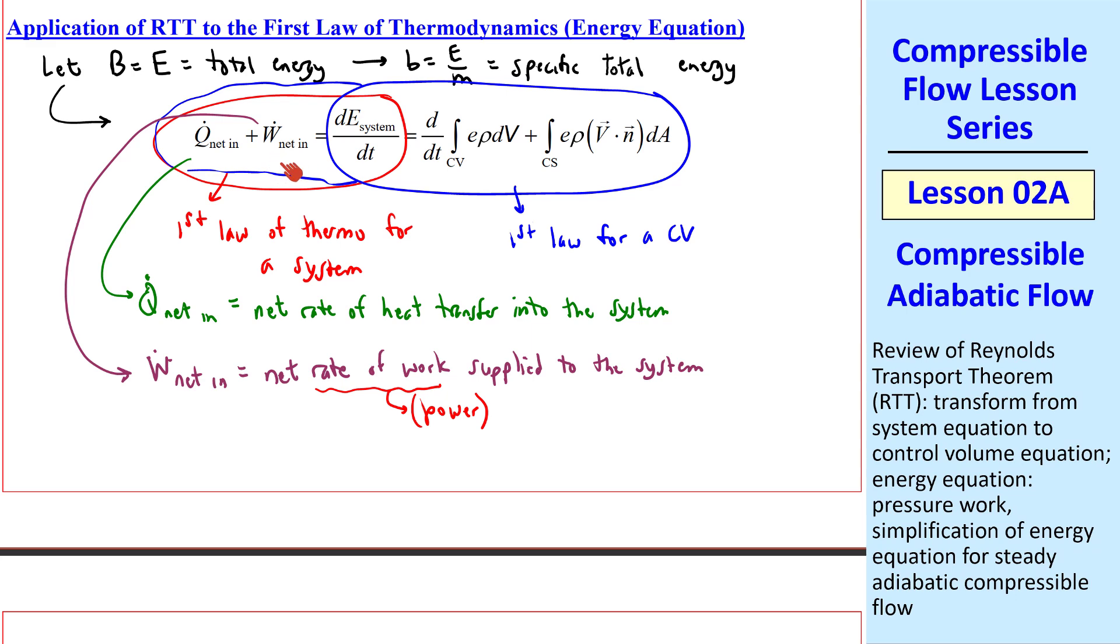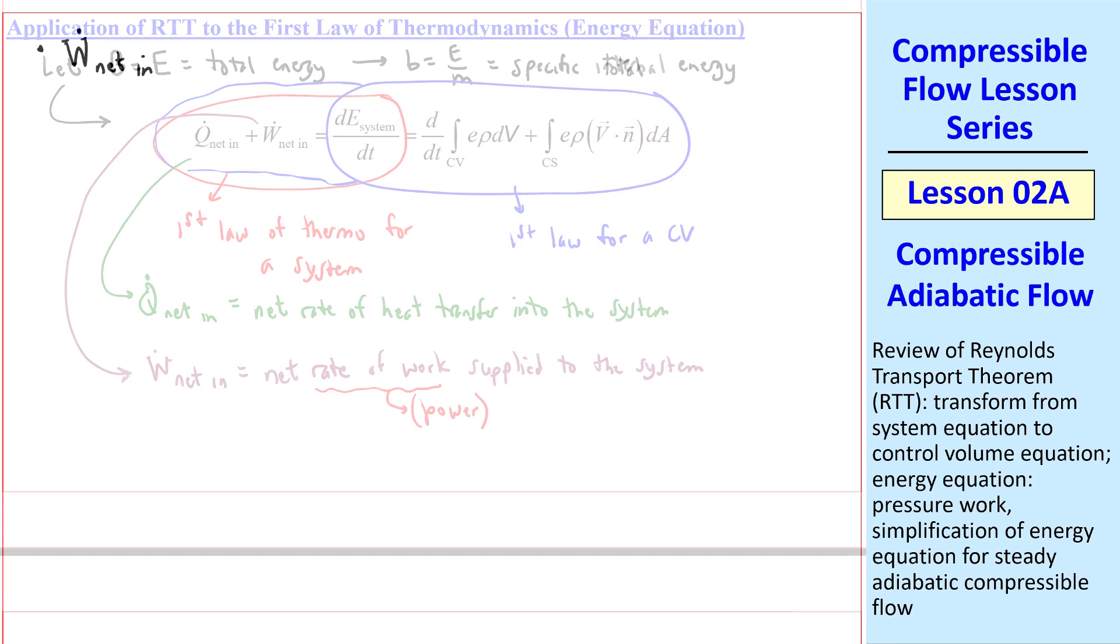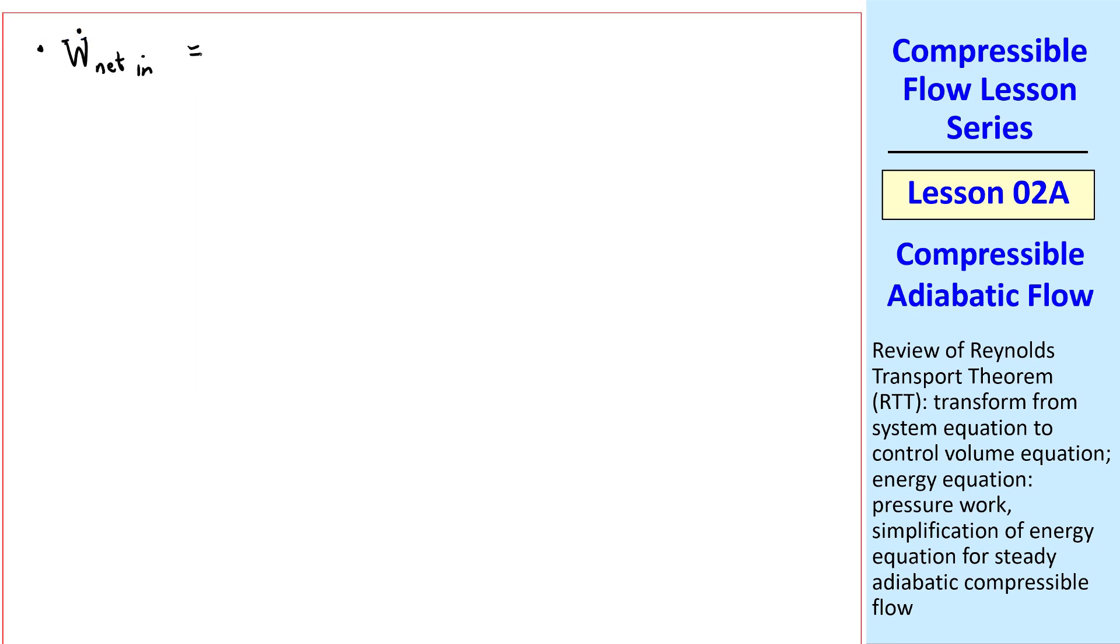Now let's more closely examine this power term. We'll consider two components of W dot net in, a shaft power and a pressure power. Shaft power, as we recall from our fluids class, is when we have a rotating shaft passing through the control surface, such as into pumps or turbines. Pumps add power, whereas turbines extract power. But in our study of compressible flow, we'll ignore this term, since we're typically not analyzing pumps and turbines.